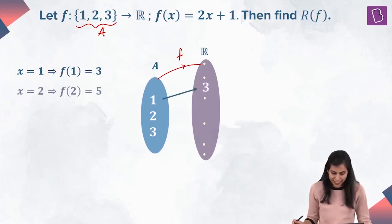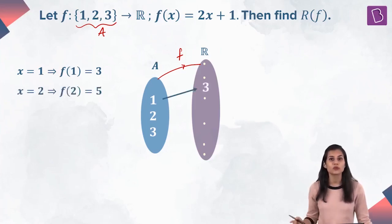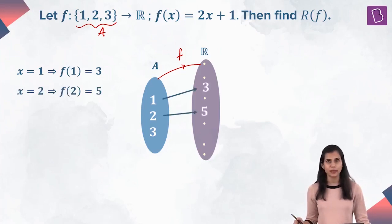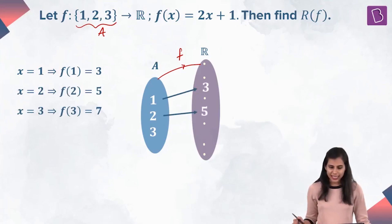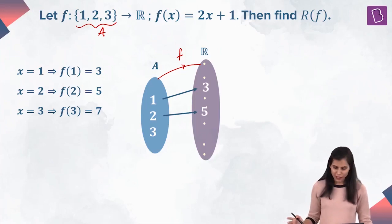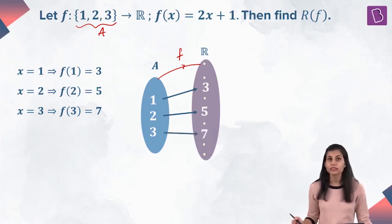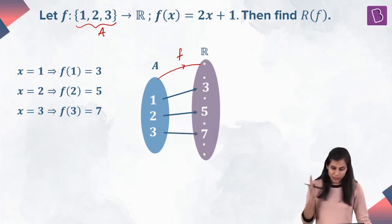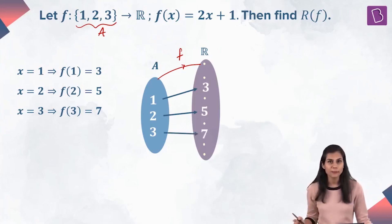When x equals 2, f(x) = 2×2 + 1, that gives you 5. So 2 gets mapped to 5. Then when x is 3, f(x) = 2×3 + 1, that means 3 gets mapped to 7. That's how f is mapping the domain members to co-domain members.